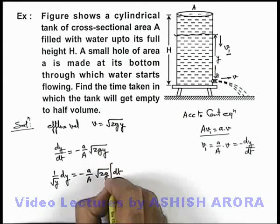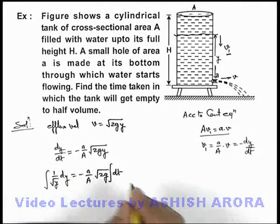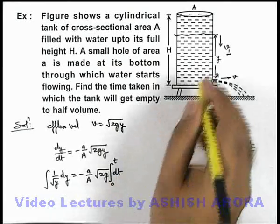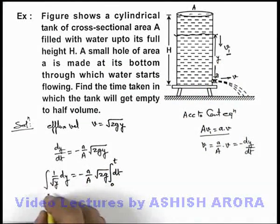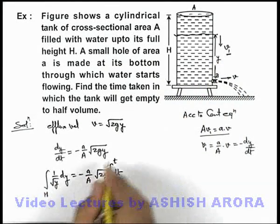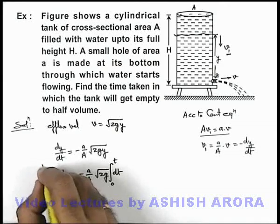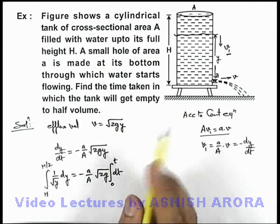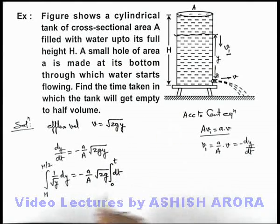Now if we integrate this expression within limits for time from zero to t, and at t equals zero this height of water level was H, and after time t it will reduce to H/2 as we wish to find out the time in which it will get half empty.